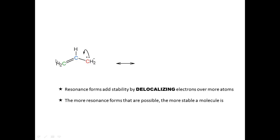One key rule about resonance is that all resonance forms must be valid Lewis structures — you can't just make things up. So I break that pi bond, and in the resulting resonance form the electrons that were in the pi bond are now on that carbon as a lone pair, and the electrons that were the lone pair are now forming a pi bond between those two carbons.